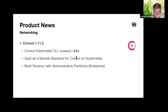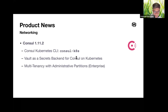The main new thing in Consul 1.11 is a new tool named 'consul-k8s CLI' that enables you to quickly install and interact with Consul on Kubernetes. It enables users to set HashiCorp Vault as a native secret backend instead of Kubernetes secrets, providing a more comprehensive zero-trust networking solution. Multi-tenancy with admin partitions enables multiple Kubernetes clusters and VMs from different tenants to share a single Consul control plane.